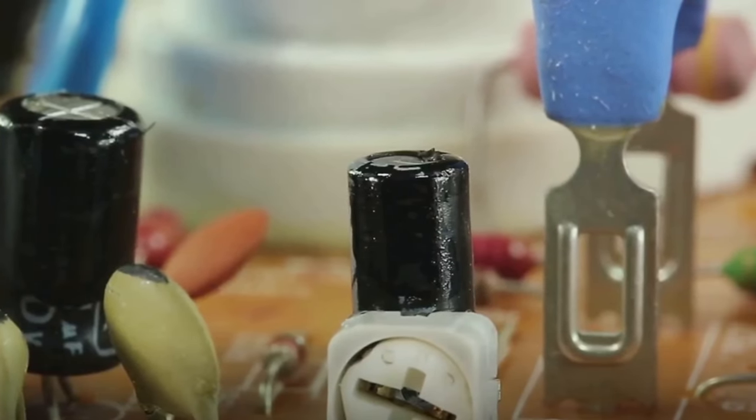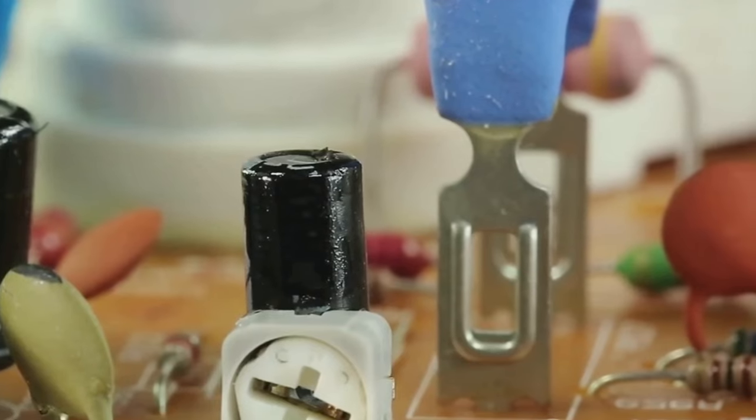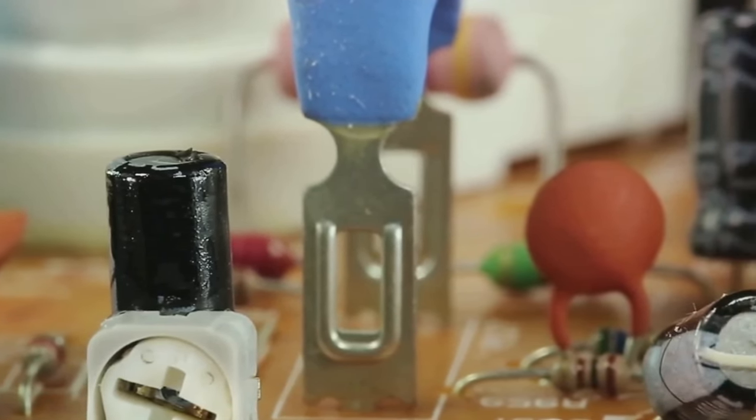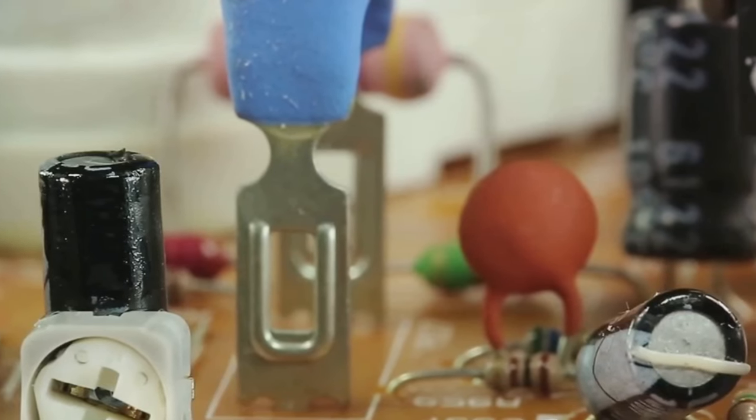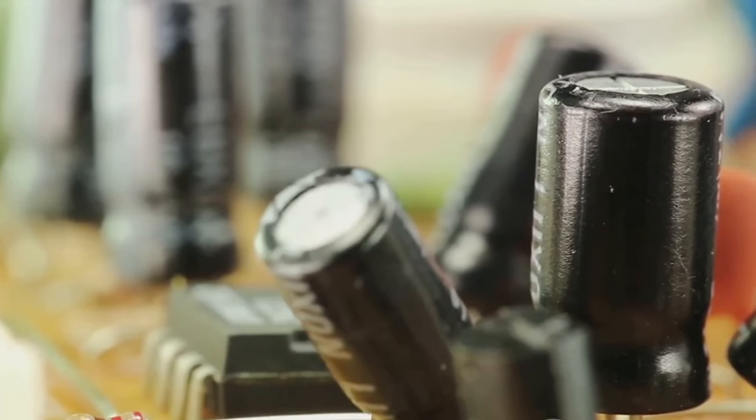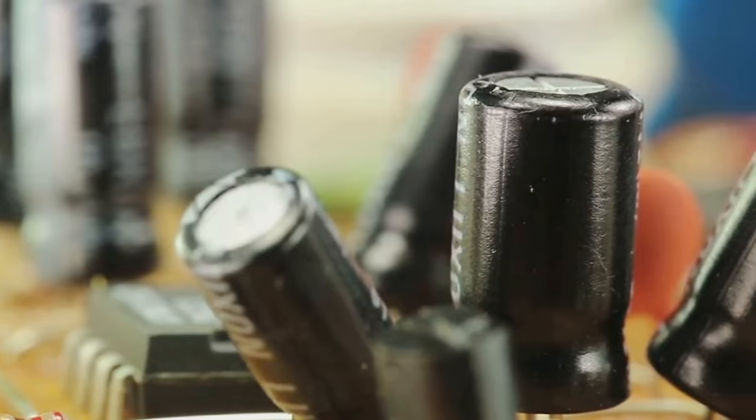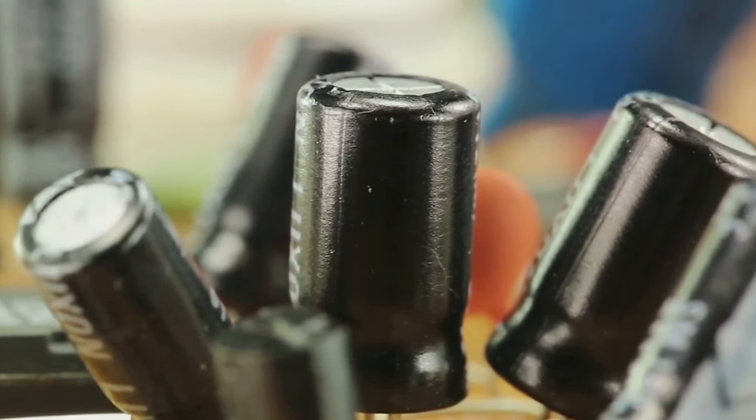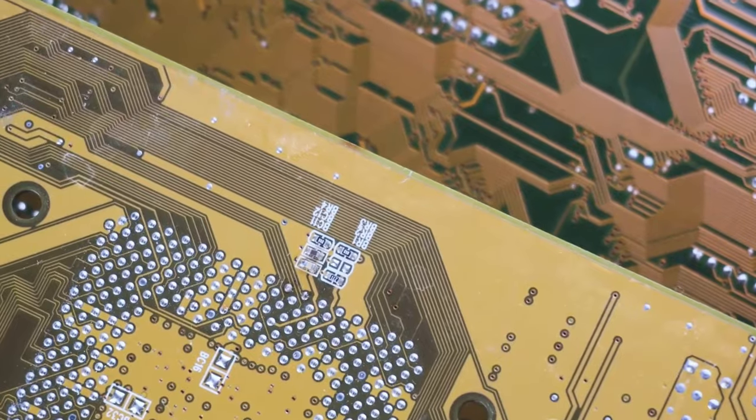Miniature Circuit Breakers, or MCBs, are compact devices that safeguard our electrical circuits from overloads and short circuits. They're like the silent guardians, ever vigilant, ensuring that the flow of electricity in our homes and offices is safe and smooth.